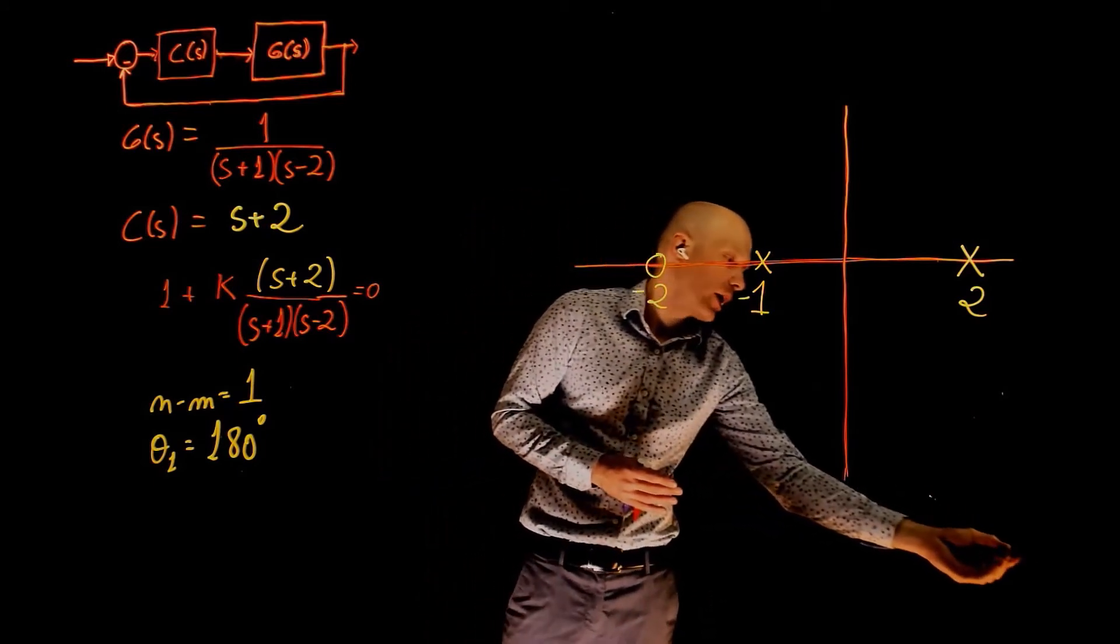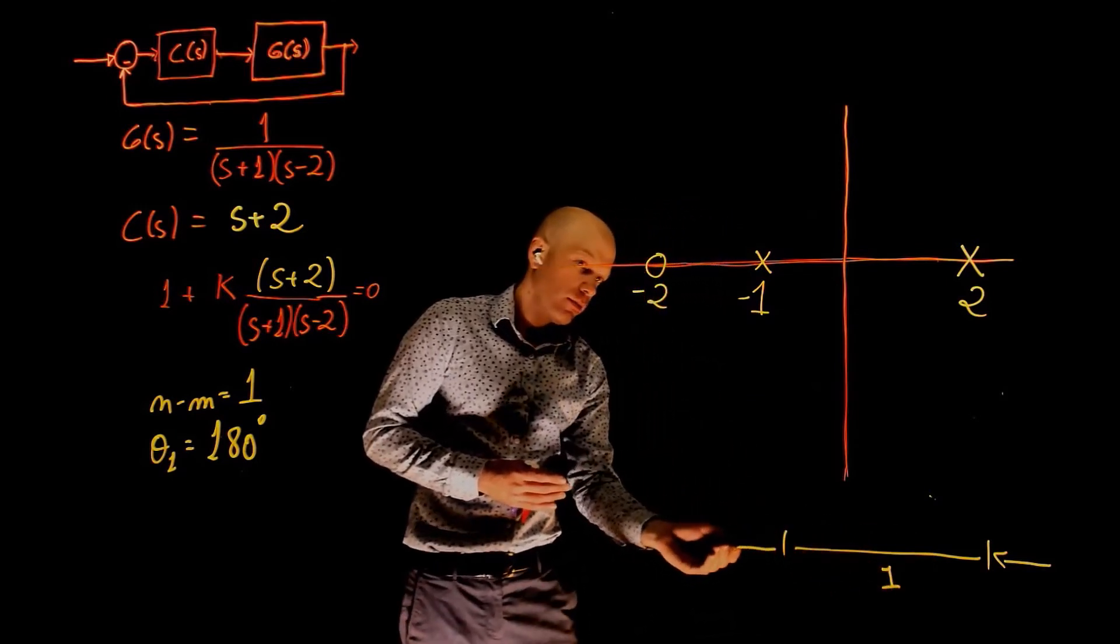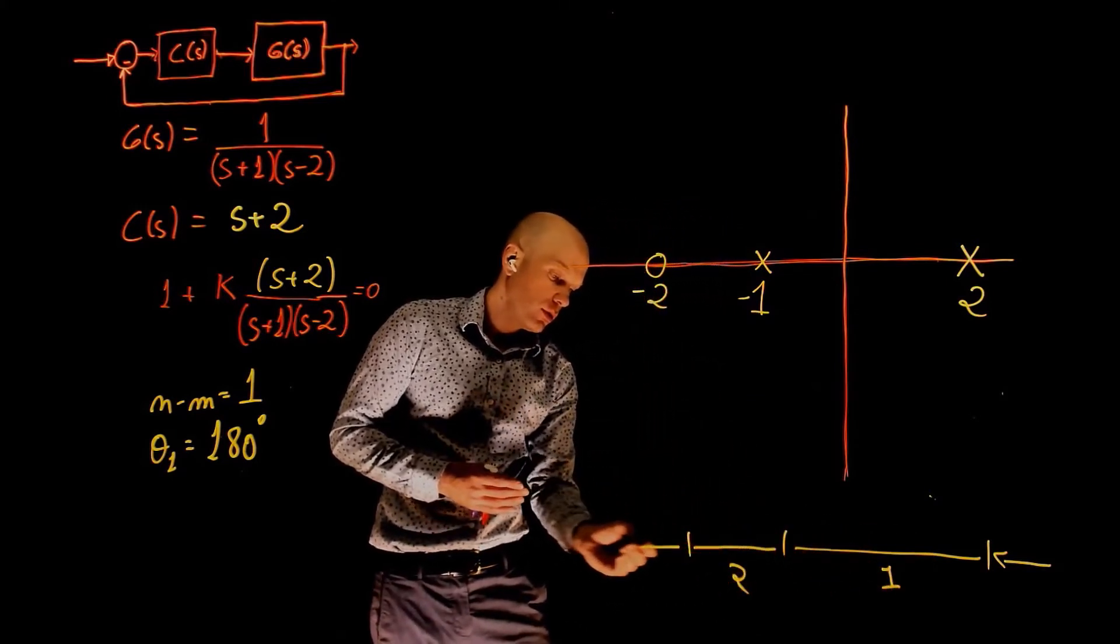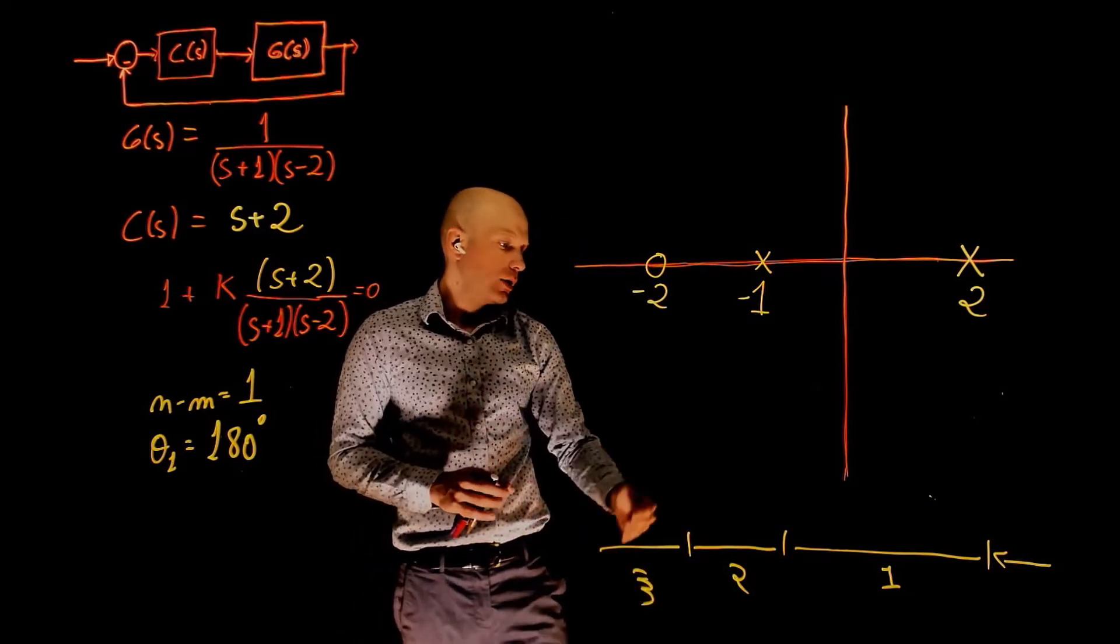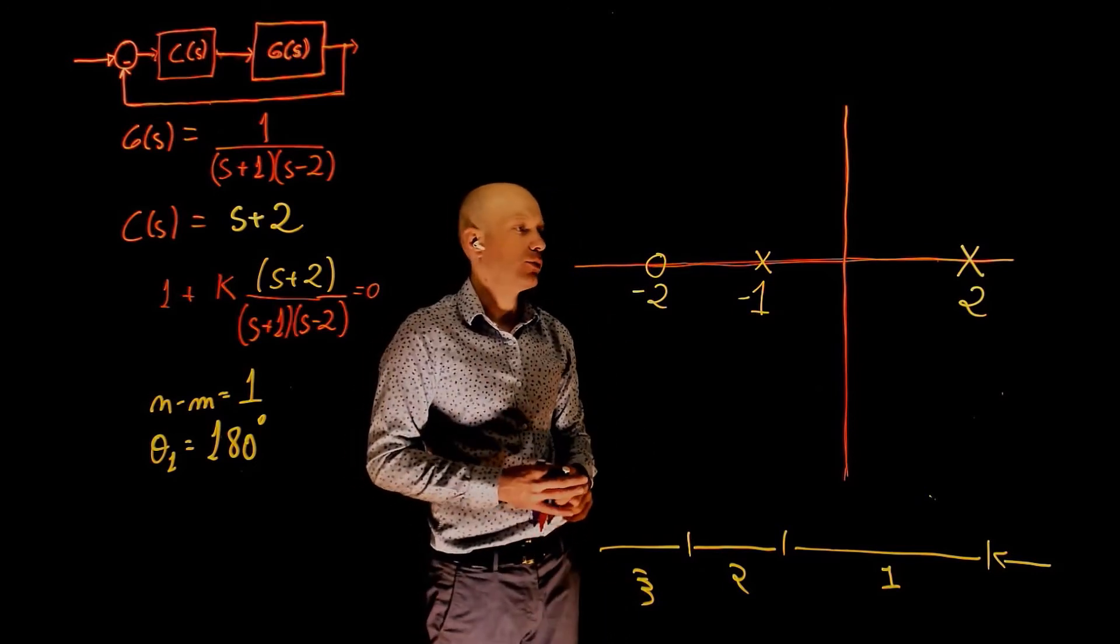So if we start counting, here we have 0, 1, 2, 3. So anything that is odd has a root locus that is between 2 and negative 1 and to the left of negative 2.